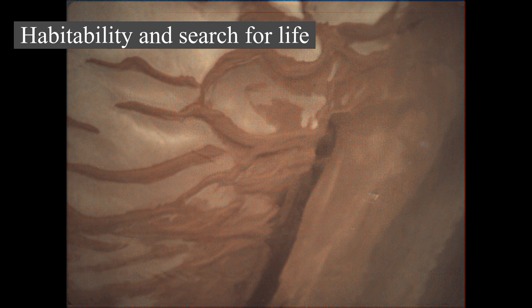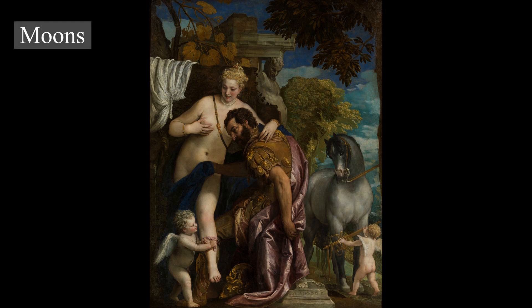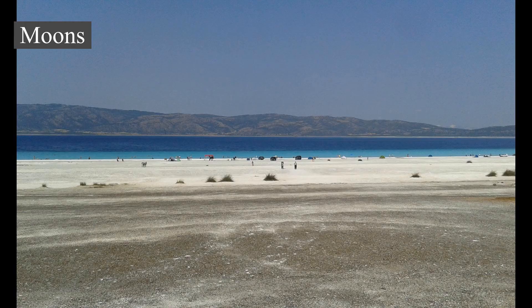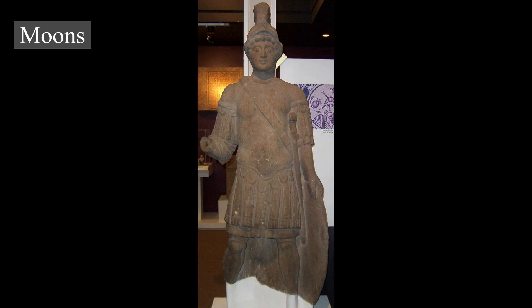Mars has two relatively small natural moons compared to Earth's: Phobos, about 22 km in diameter, and Deimos, about 12 km in diameter, which orbit close to the planet. The origin of both moons is unclear, though a popular theory states they were asteroids captured into Martian orbit. Both satellites were discovered in 1877 by Asaph Hall and were named after the characters Phobos (panic/fear) and Deimos (terror/dread), who in Greek mythology accompanied their father Ares, god of war, into battle.